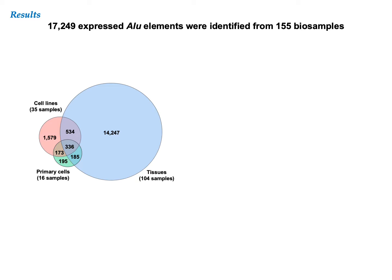There are about half a million Alu elements located in intergenic regions. Theoretically, they would be transcribed by Pol III and not by Pol II. When we applied our pipeline to the RAMPAGE data from 155 samples, we identified in total 17,000 elements expressed in at least one sample. Thus, only 3.5% of intergenic Alu elements show evidence of being transcribed. This Venn diagram illustrates the breakdown of the 17,000 expressed Alu elements across tissues, cell lines, and primary cells.